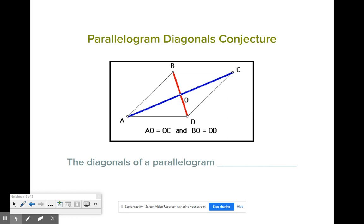So no, they are not congruent. But there is something unique that happens with them. They actually bisect each other.